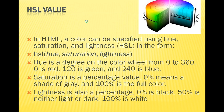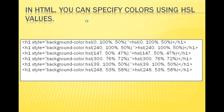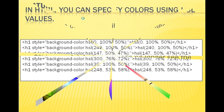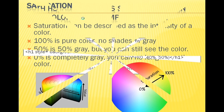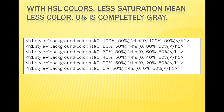Lightness is also a percentage value - 0% is black color, 50% is neither light nor dark, 100% is total white color. In HTML, you can specify colors using HSL values. Saturation describes the intensity of the color - 100% is pure color, and 0% is complete gray. You can try these values in Notepad. With HSL color values, 0% saturation gives complete gray color.